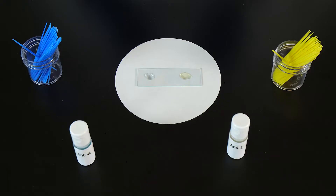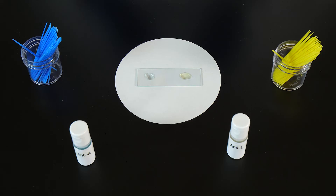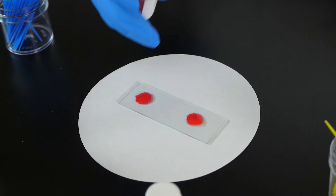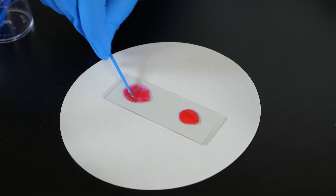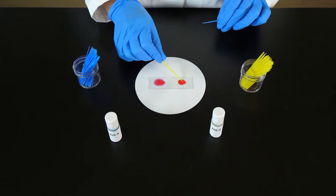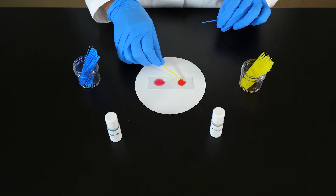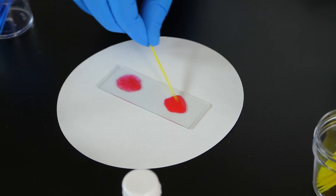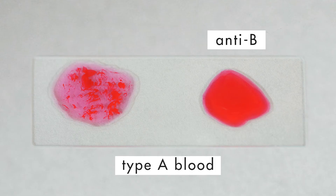Anti-A antibodies react to antigen A in type A blood. If type A blood is added to a serum containing anti-A antibodies, the red blood cells stick together. However, when type A blood is added to a serum containing anti-B antibodies, no reaction occurs.